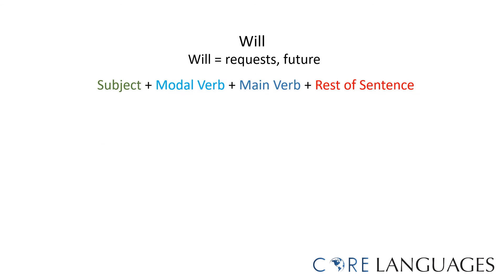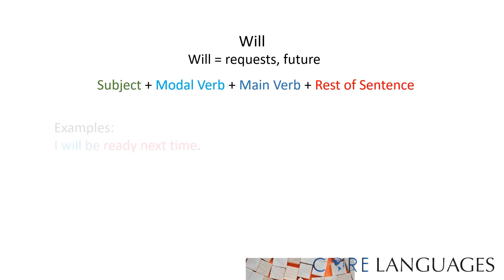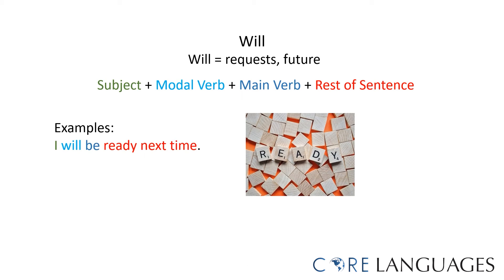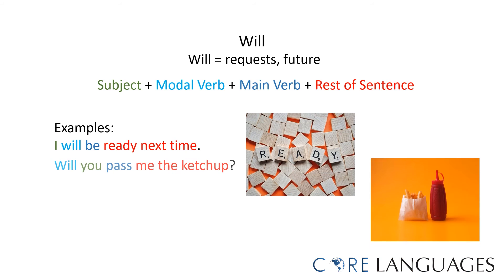The auxiliary verb 'will' is used to express requests, but it is also used to talk about things in the future. For example, I will be ready next time. Or, will you pass me the ketchup? The first sentence is an example of the future tense, and the second sentence is making a request.